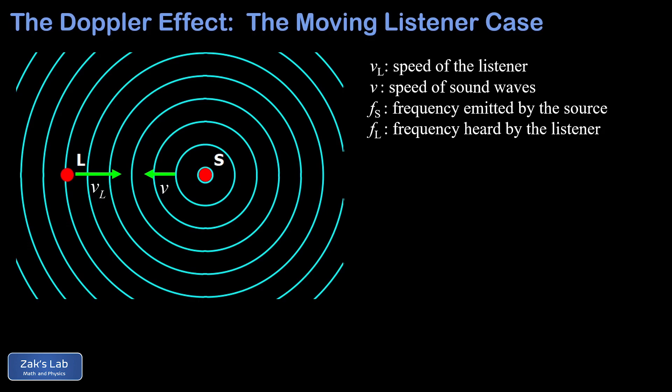We start by getting the wavelength of the sound waves: lambda equals V over FS. That's a quick modification of the wave speed formula V equals F lambda. Lambda is the distance between the wave crests. We can figure out the time it takes the listener to cross crest to crest by rearranging distance equals rate times time to: time equals distance over rate.